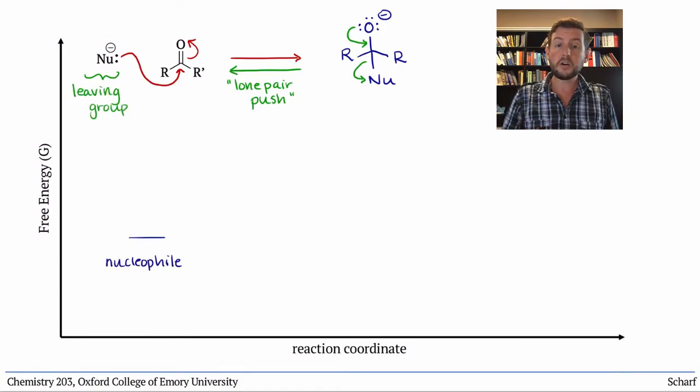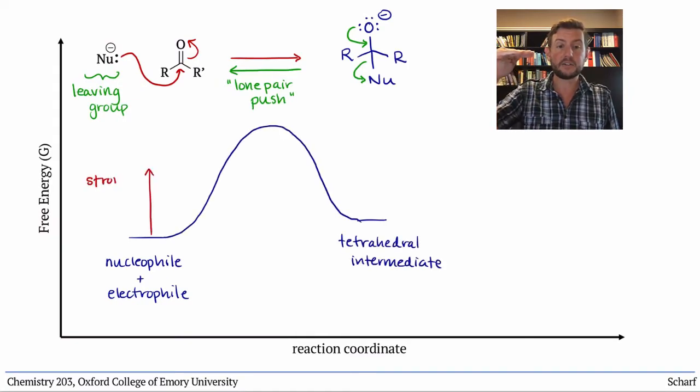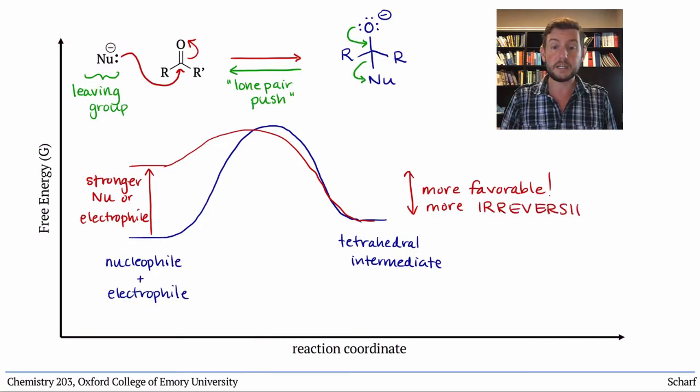The stronger the nucleophile and the stronger the electrophile, the higher in energy the starting materials are, and therefore the more favorable the forward reaction, the larger its equilibrium constant and the more irreversible it is.